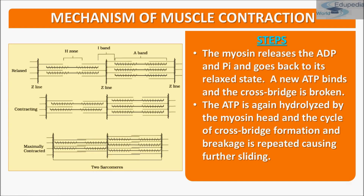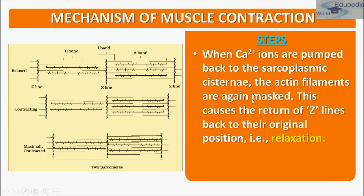Myosin releases ADP and inorganic phosphate and goes back to its relaxed state. A new ATP binds and the cross bridge is broken. ATP is again hydrolyzed by the myosin head and the cycle of cross bridge formation and breakage is repeated, causing further sliding. When Ca²⁺ ions are pumped back to the sarcoplasmic cisternae, the actin filaments are again masked, causing the Z lines to return to their original position — which is relaxation.